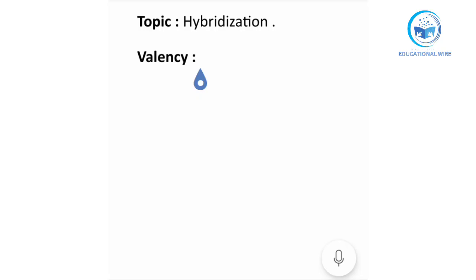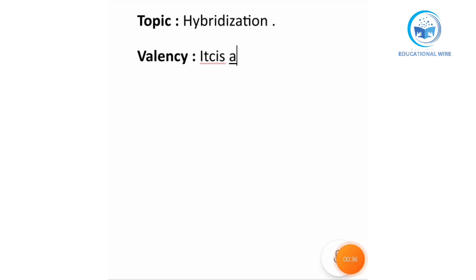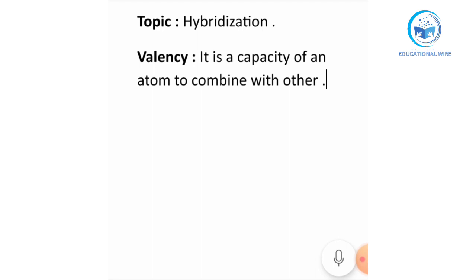Hello everyone, hope you all are doing well. Today we will start our chemistry new topic, that is hybridization. First of all we will talk about valency. Basically, valency is the capacity of an atom to combine with another atom.